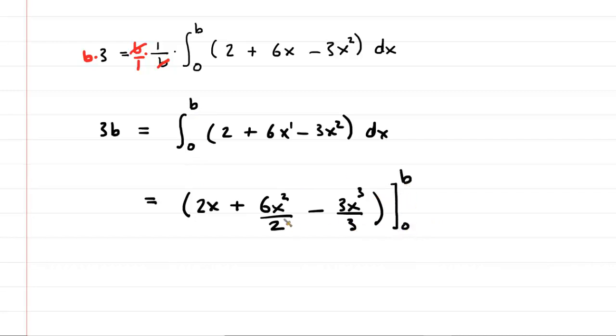So those are our limits again. And maybe before we do this, we can simplify a little bit. Here we have 6 divided by 2. So that's going to be 3. And then 3 divided by 3 is going to be 1. So we can just clean this up a little bit. This will just be 1x cubed. And then over here, this is going to be 3x squared. So that's a little nicer. And then don't forget the 3b over here. Okay, so we've integrated.